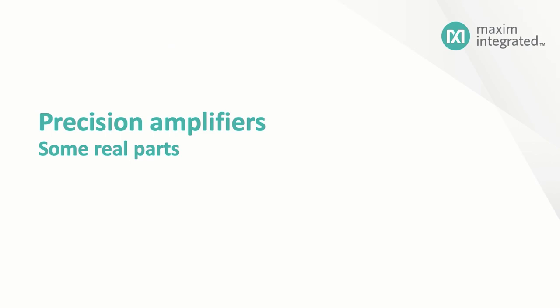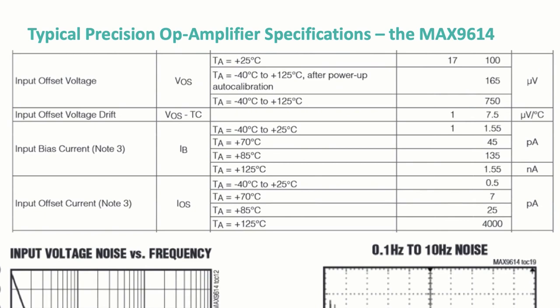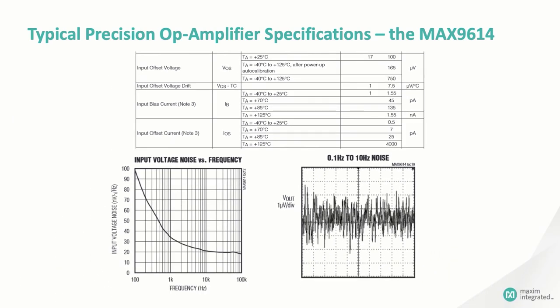Okay, now that we have a handle on the basics, let's take a look at a couple of real-world amplifiers. First up is the MAX9614. It's a power-up auto-zero amplifier, which means that for noise purposes, it behaves like an ordinary non-compensated amplifier. But every time it powers up, the inputs and the output disconnect as the device automatically zeroes itself. After a few milliseconds, it's ready to go. You can see that the input offset voltage is pretty good, typically just 17 microvolts at room temperature, and no more than 165 microvolts after the auto-calibration sequence over the entire temperature range.